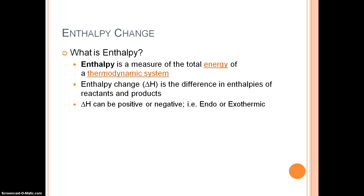Enthalpy — what exactly is enthalpy? The basic definition of enthalpy is a measure of the total energy of a thermodynamic system. A thermodynamic system consists of a system and the surroundings. Enthalpy change, noted by delta H, is the difference in enthalpies of reactants and products. We're measuring energy of a system and the surroundings to see if anything had changed.